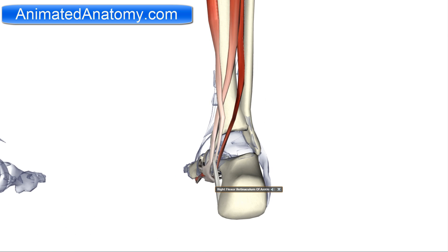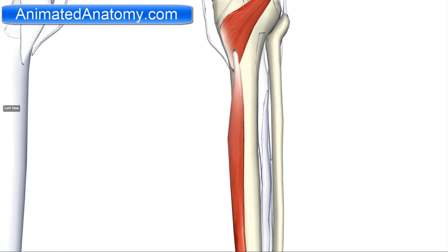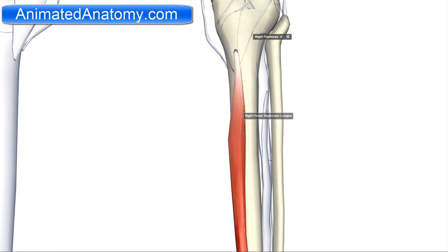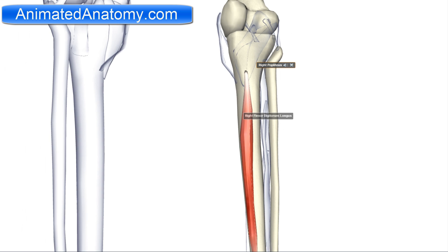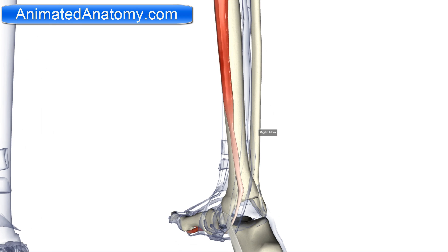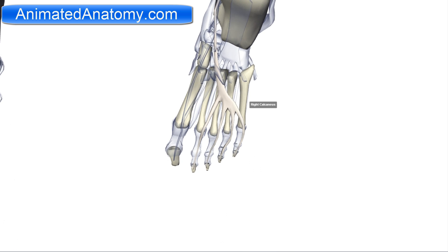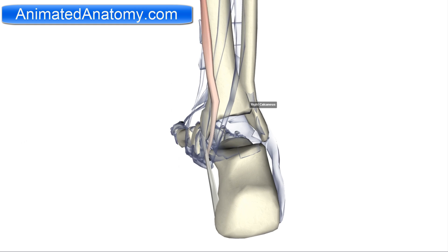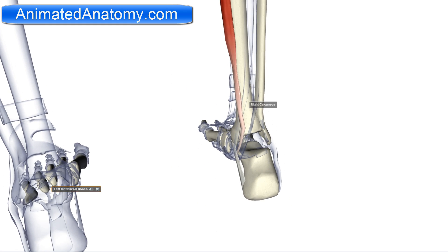Now let's start by explaining one by one. This muscle here is the flexor digitorum longus. The flexor digitorum longus has the origin on the medial tibia. The insertion of this muscle is on the distal phalanges of the lateral four fingers. This muscle is innervated by the tibial nerve and it serves as a flexor of the lateral four fingers.